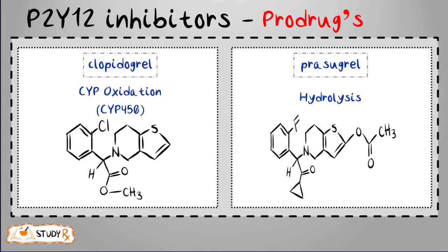Cytochrome P450 enzymes are primarily found in liver cells but are also located throughout the body. Within cells, they are located in the endoplasmic reticulum — a structure involved in protein processing and transport — and the mitochondria, the energy-producing centers of cells. Oxidation occurs when the oxidation state of a molecule, atom, or ion is increased, or more simply, when oxygen is added to a compound.